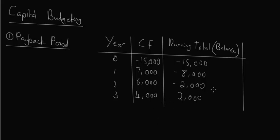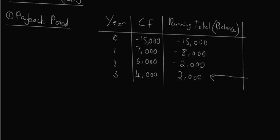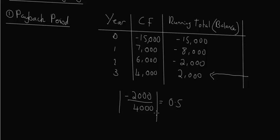The question is: how long is the payback period? We know we break even sometime in the third year. At the beginning of the third year, we were still negative $2,000, but by the end we're positive. To find exactly when, we take the negative balance from the previous year and divide it by the positive cash flow from the third year: $2,000 divided by $4,000 equals 0.5 — exactly halfway through the third year. So the payback period is 2 + 0.5 = 2.5 years.